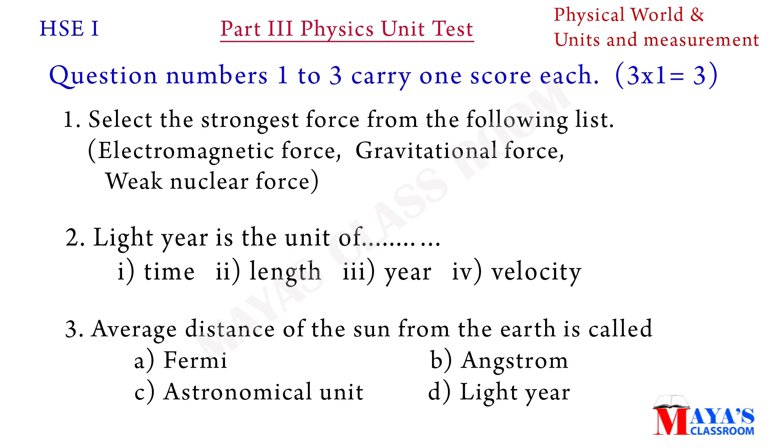Third question: average distance of the sun from the earth is called - A Fermi, B Armstrong, C astronomical unit, D light year.